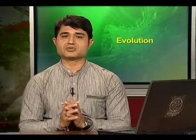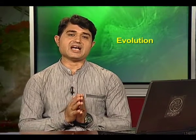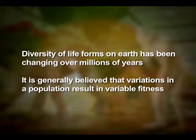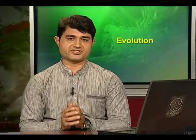We can conclude that the origin of life on earth can be understood only against the background of the origin of the universe, especially earth. Most scientists believe chemical evolution — that is, the formation of biomolecules — preceded the appearance of the first cellular forms of life. The subsequent events are a conjectured story based on Darwinian ideas of organic evolution by natural selection. Diversity of life forms on earth has been changing over millions of years, and it is generally believed that variations in a population result in variable fitness. Other phenomena like habitat fragmentation and genetic drift may accentuate these variations, leading to the appearance of new species and hence evolution.